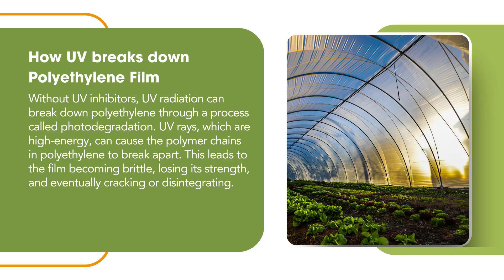Let's talk about how UV actually breaks down the plastic. UV rays, which are high energy, can cause the polymer chains in polyethylene to break apart. This leads to the film becoming brittle, losing its strength, and eventually cracking or disintegrating.